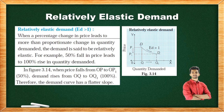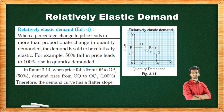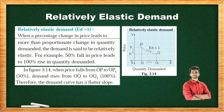Relatively Elastic Demand — ED greater than 1. When a percentage change in price leads to more than proportionate change in quantity demanded. For example, a 50% fall in price leads to a 100% rise in quantity demanded. In figure 3.14, when price falls from OP to OP1 — that is 50% — demand rises from OQ to OQ1, that is 100%. Therefore, the demand curve has a flatter slope, indicating relatively elastic demand — more change.